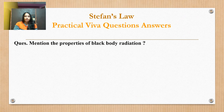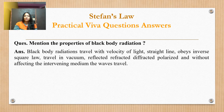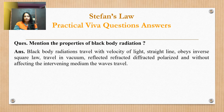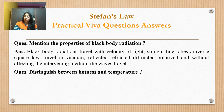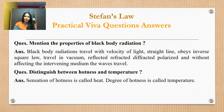Next question: mention the properties of black body radiation. Black body radiation travels with the velocity of light, in straight lines, obeys the inverse square law, can travel in vacuum, and can be reflected, diffracted, and polarized without affecting the intervening medium. Distinguish between hotness and temperature: the sensation of hotness is called heat; the degree of hotness is called temperature.